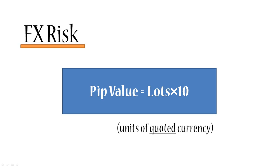So if you're trading the euro-dollar and you're in the market with one lot, then every time the currency moves one pip in your favor you're earning 1 times 10 equals $10 — since the quoted currency is dollars. If you're in the market with ten lots, then every time the currency moves in your favor you're earning $100. That's a very simple concept and a very powerful formula to remember and use in your trading.